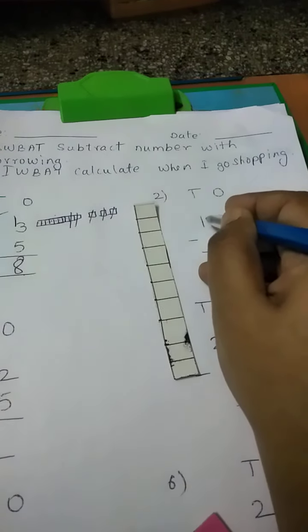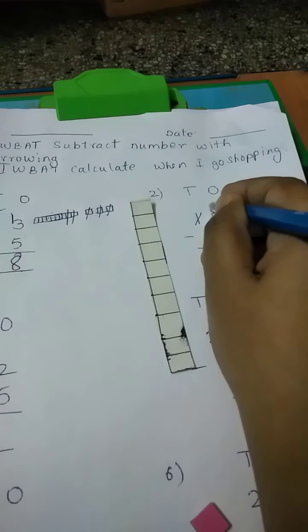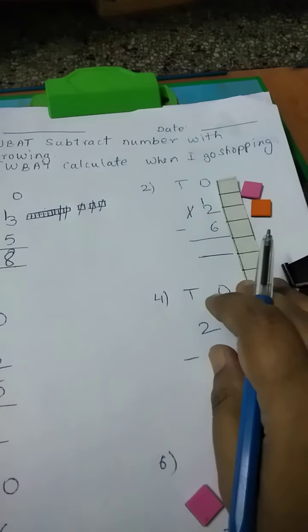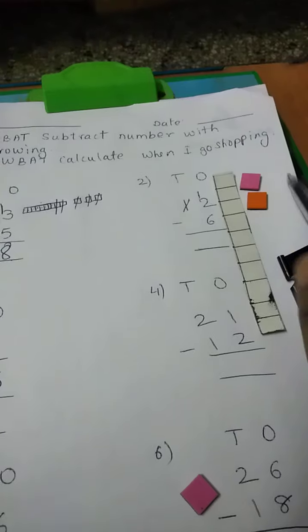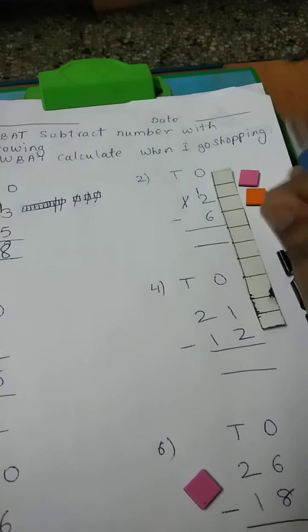This number is 12. So what will I do? From here I will borrow 1 to here. So this will become 12 here. From 12 I will subtract 6. How many will remain?